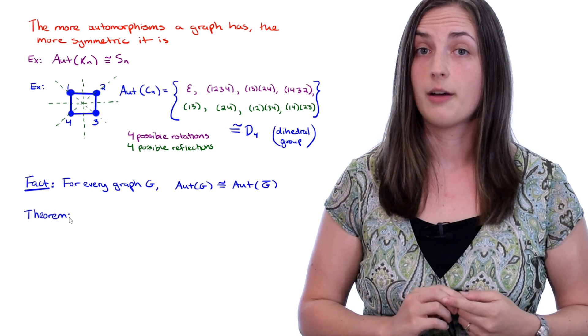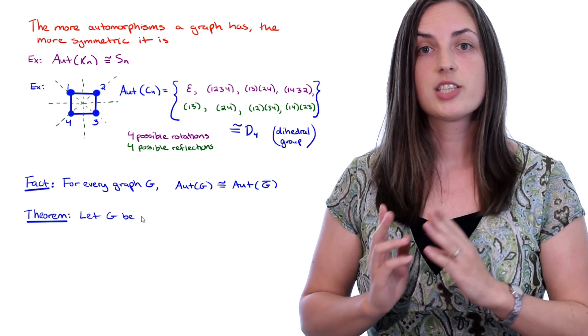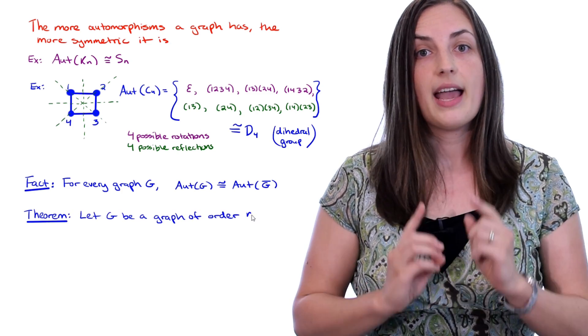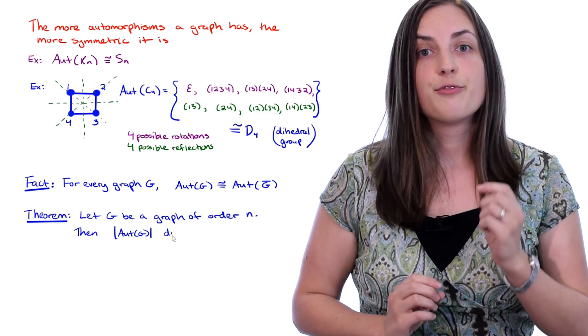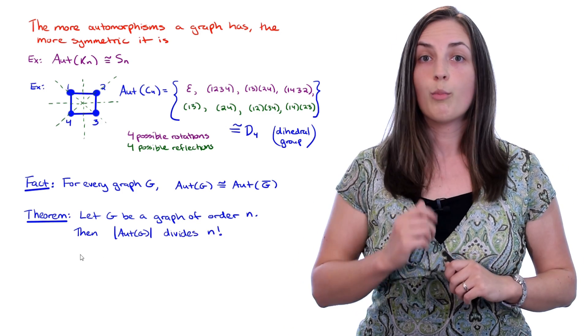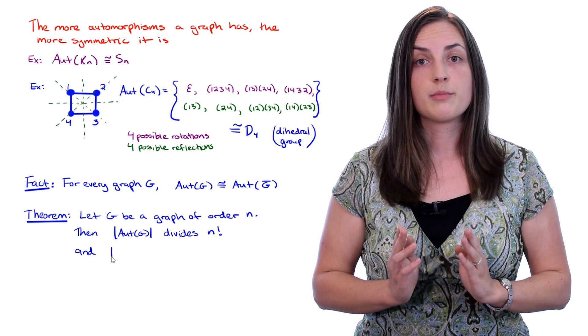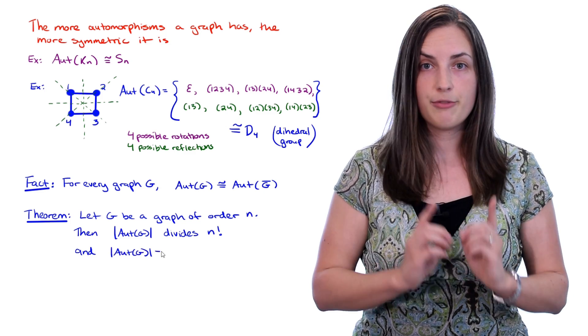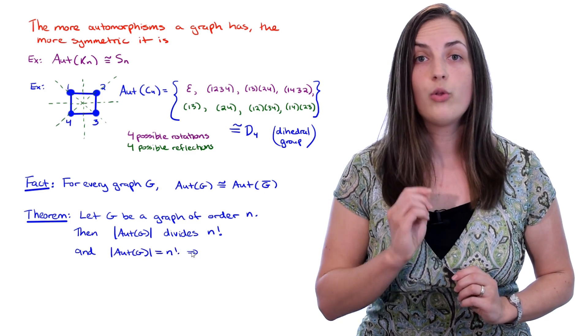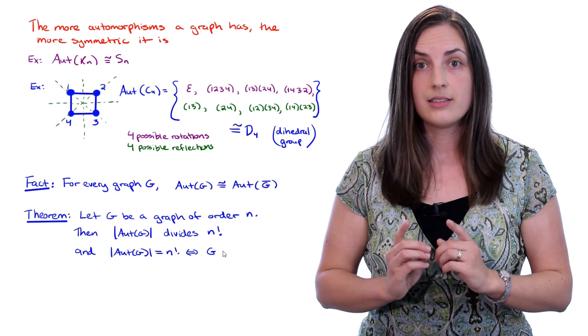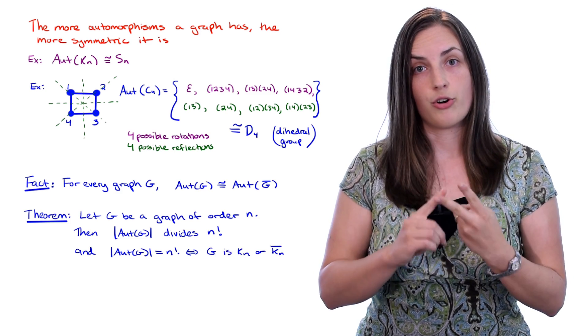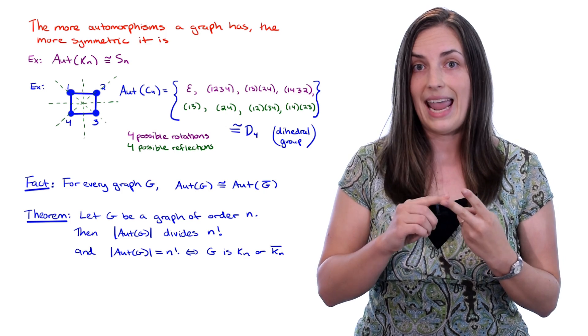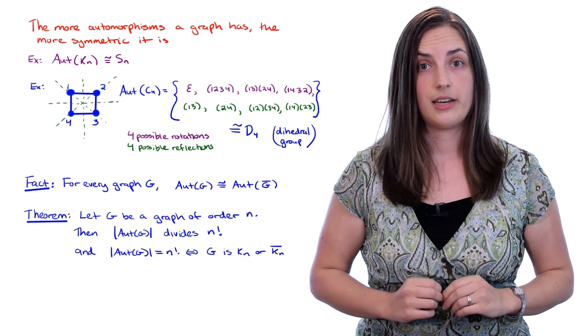Another important theorem is the following. If G is a graph of order n, then the order of the automorphism group of G divides n factorial. Moreover, the automorphism group has order equal to n factorial if, and only if, the graph is the complete graph of order n, or the empty graph of order n, which just consists of n vertices that are all isolated.